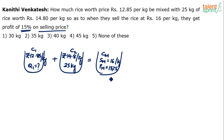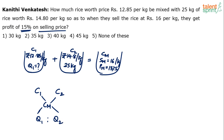Apply the alligation rule. The alligation rule uses c1, c2, and cm in a standard format. Taking cross differences gives the ratio q1 to q2. Q2 is given as 25 kg, so q1 can be calculated. We know c1 is 12.85 and c2 is 14.8, and q2 is 25. However, cm — the cost price of the mixture — is still unknown, so we must find that first.